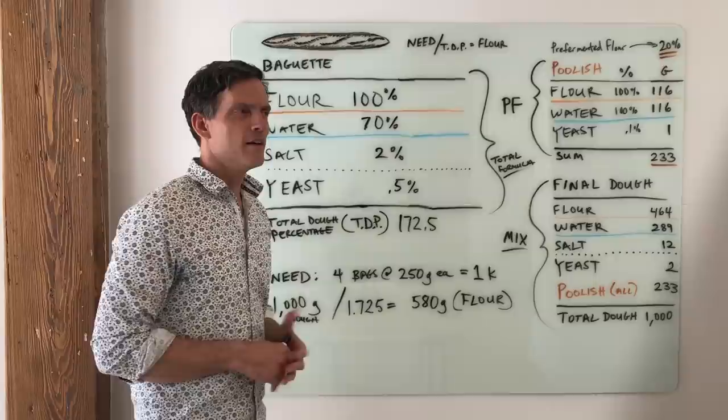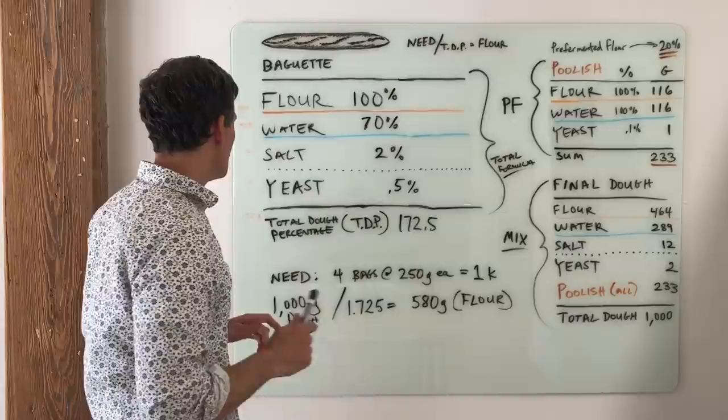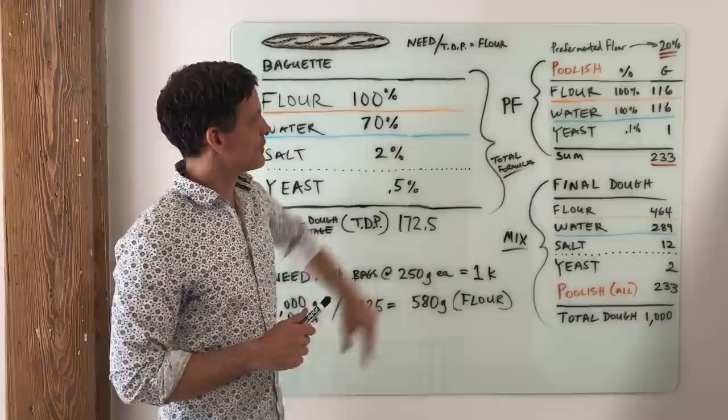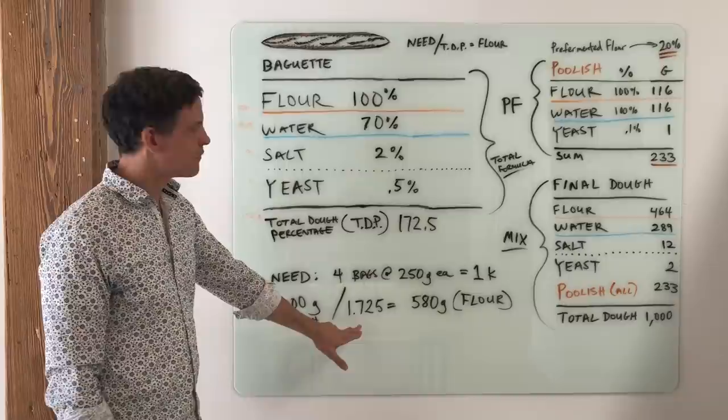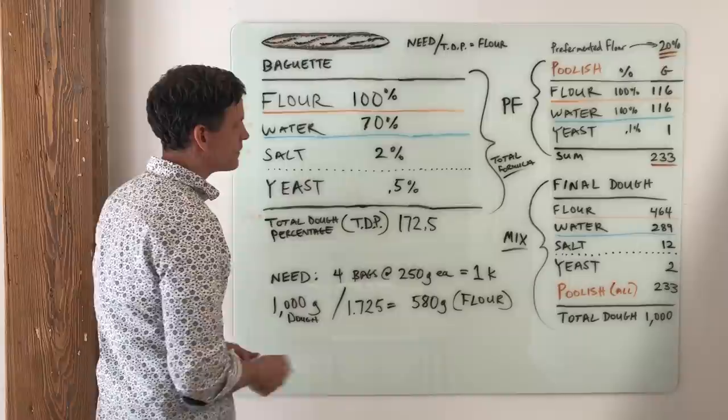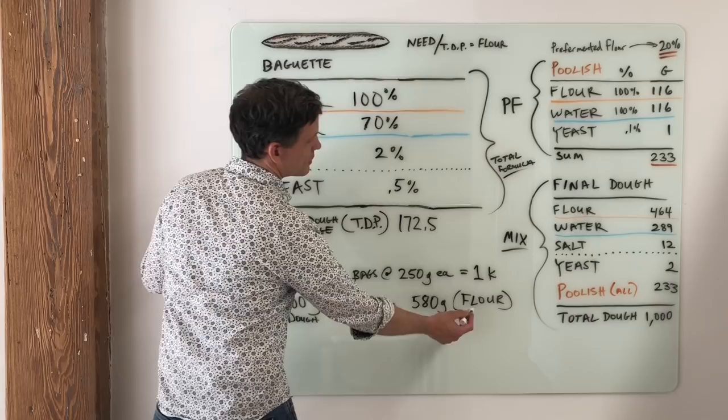Which incidentally is kind of funny because baker's dozen is 13, so maybe we should just say baker's percentages. Okay, so one kilo of dough. The way that we get the individual amounts for these ingredients is we divide our total dough by the total dough percentage, 172.5. Convert it over to a whole number. So 1,000 grams divided by 1.725. We get a number 580.